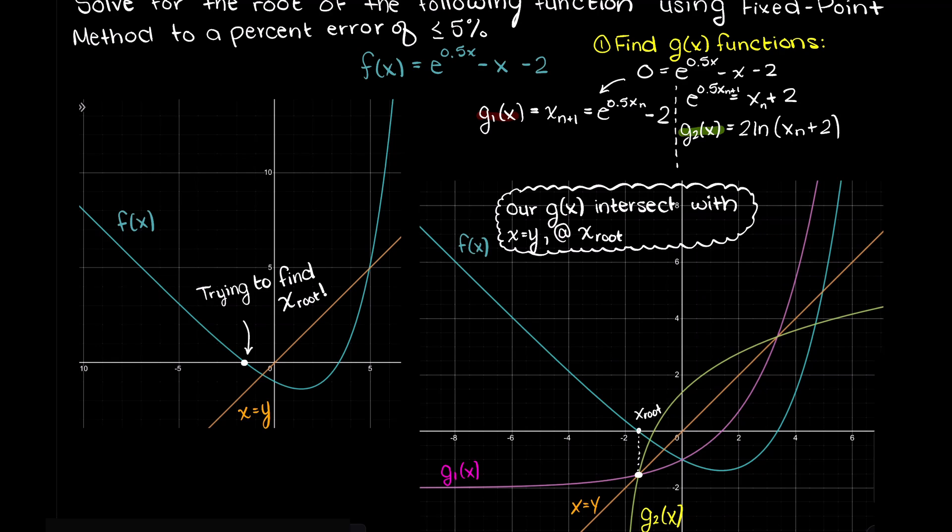Sometimes both equations will work, sometimes only one will work, or sometimes neither will work. However, as I mentioned in our fixed point convergence video, if the slope of the tangent line is greater than 1 in absolute terms at our root, then the fixed point method will never converge.